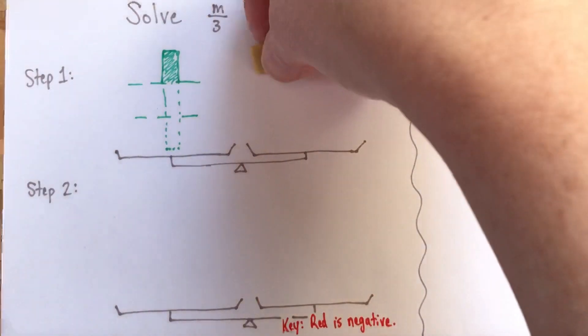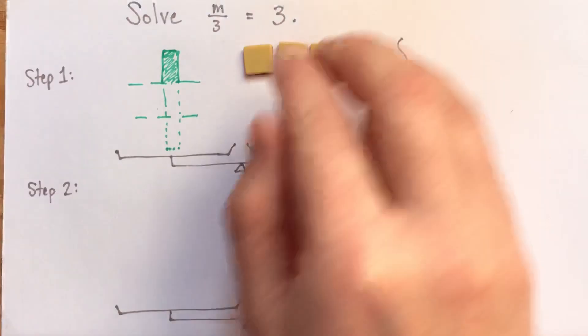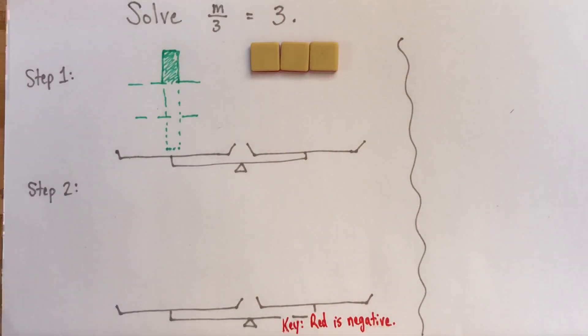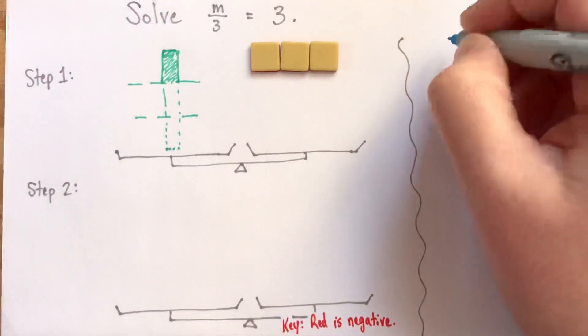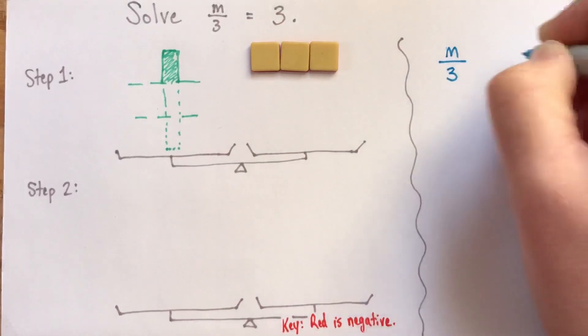Okay. So, a third of our m is 3. That's equal to that. And in this picture, well, maybe before we talk about that, I'll write this down. m divided by 3 equals 3.